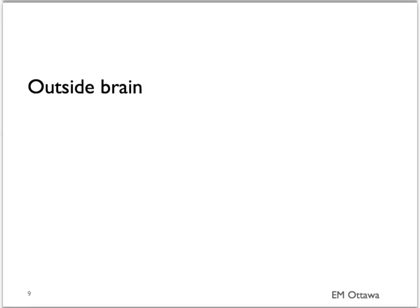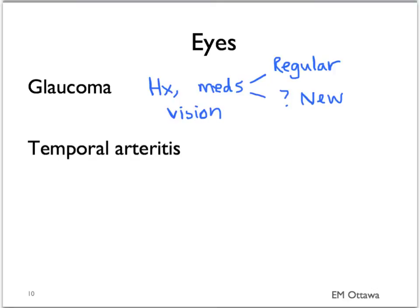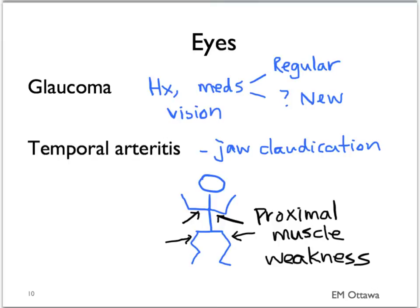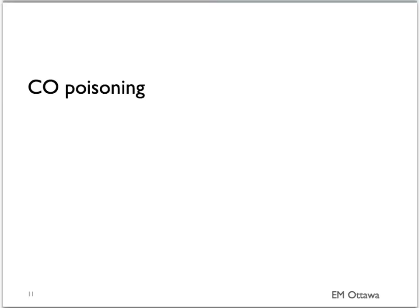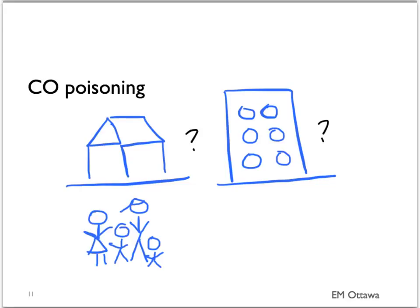For outside-brain diagnoses, the main ones affect the eye, and we also worry about carbon monoxide poisoning. For glaucoma, we need to know whether there is a history, whether they use any medications for it regularly, whether there are any new medications that might precipitate increased intraocular pressure, and whether there are any vision changes. For temporal arteritis, we need to ask about jaw claudication and proximal muscle weakness. For carbon monoxide poisoning, it's important to find out when the headaches occur — whether it only happens at a particular building, whether multiple people are affected, and whether they have a carbon monoxide alarm.